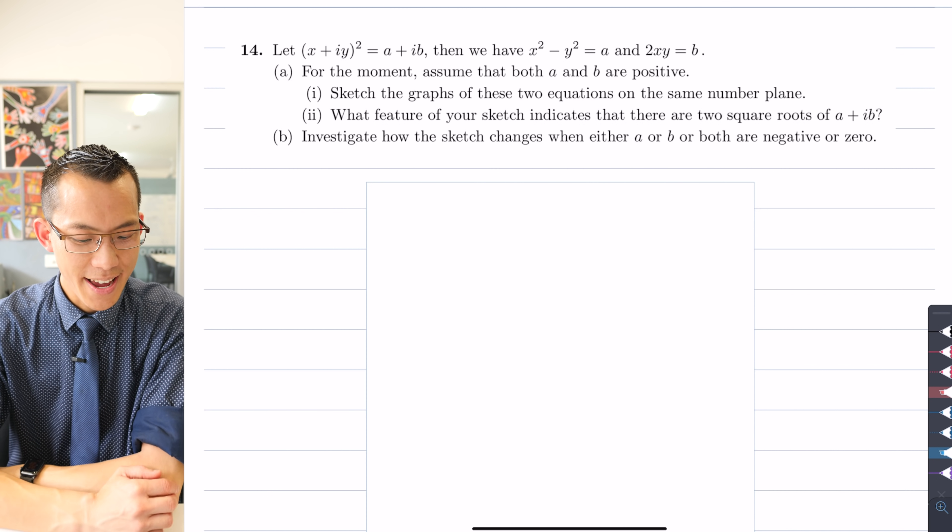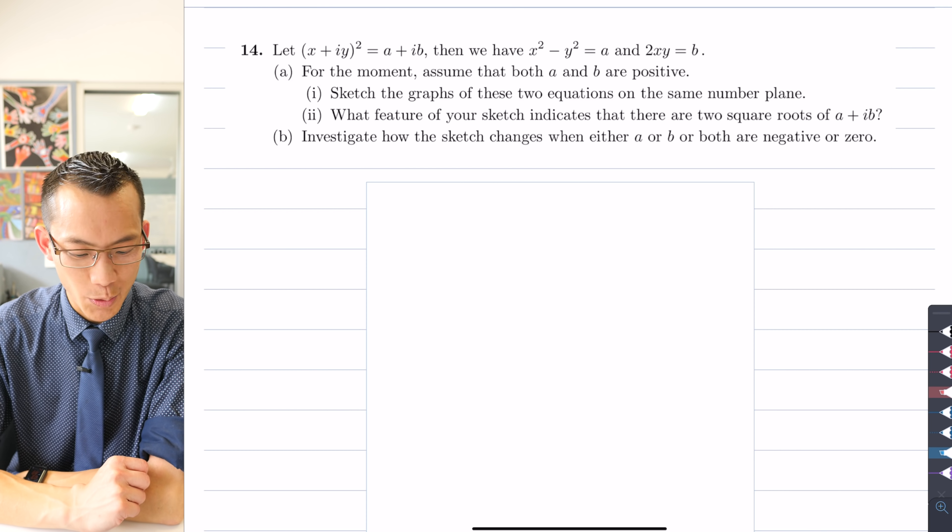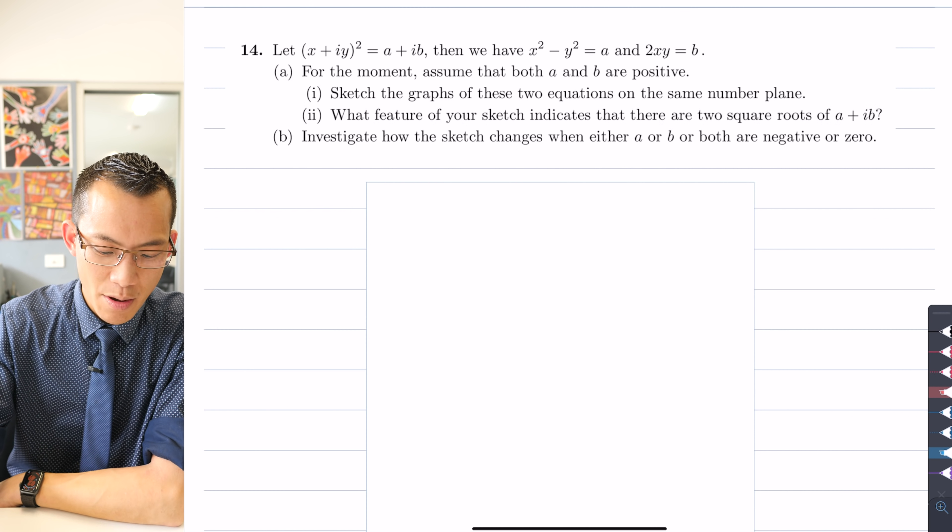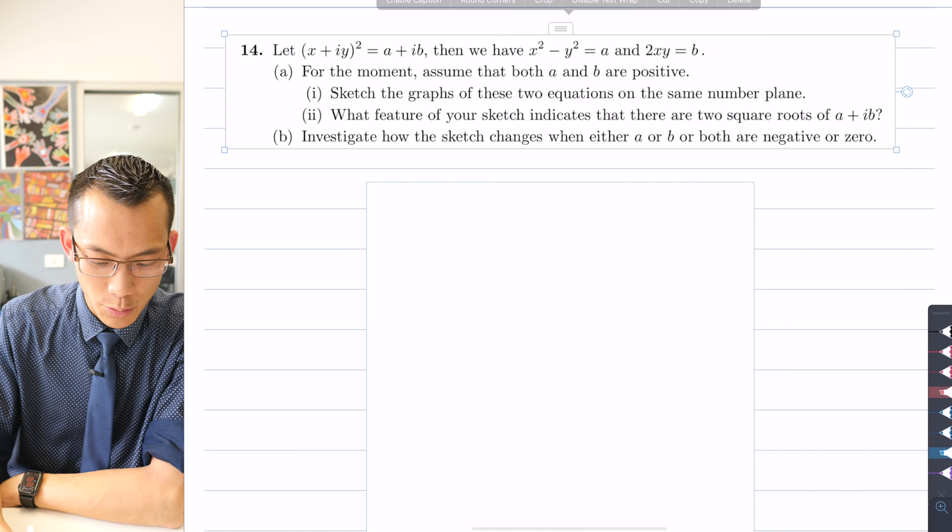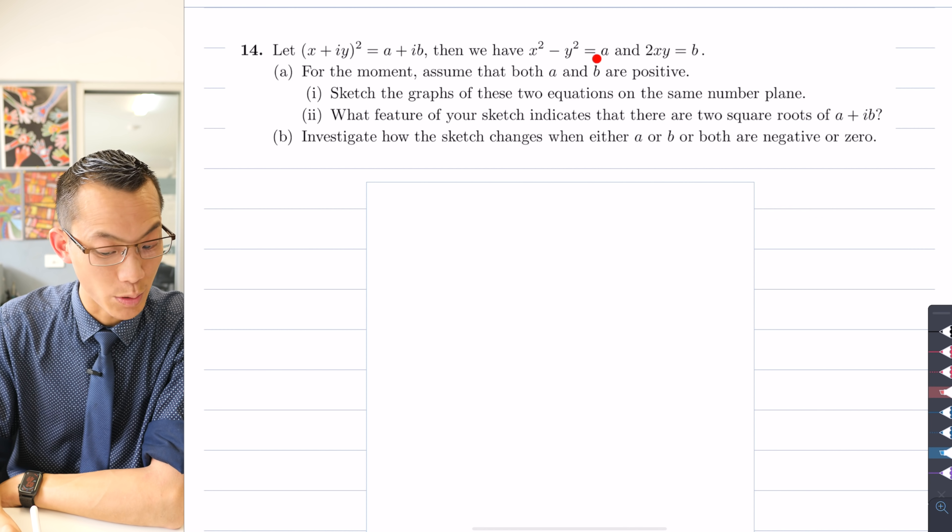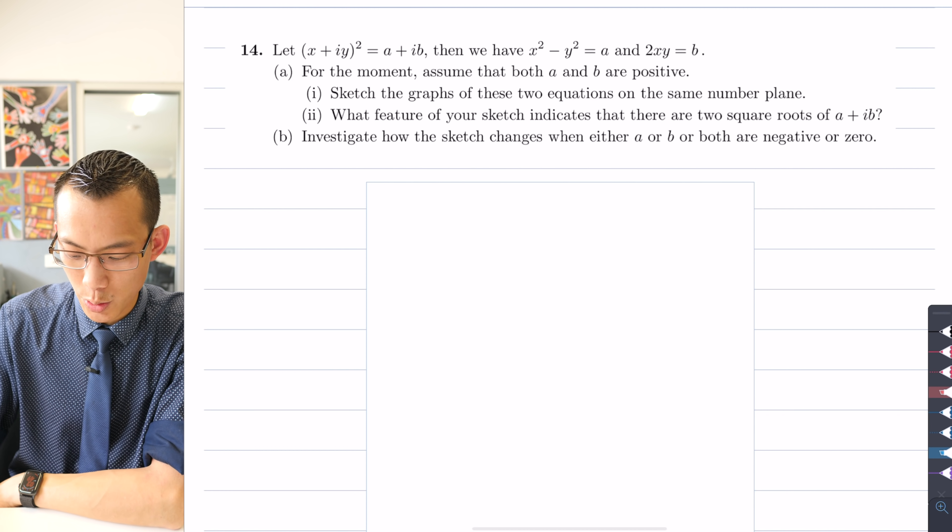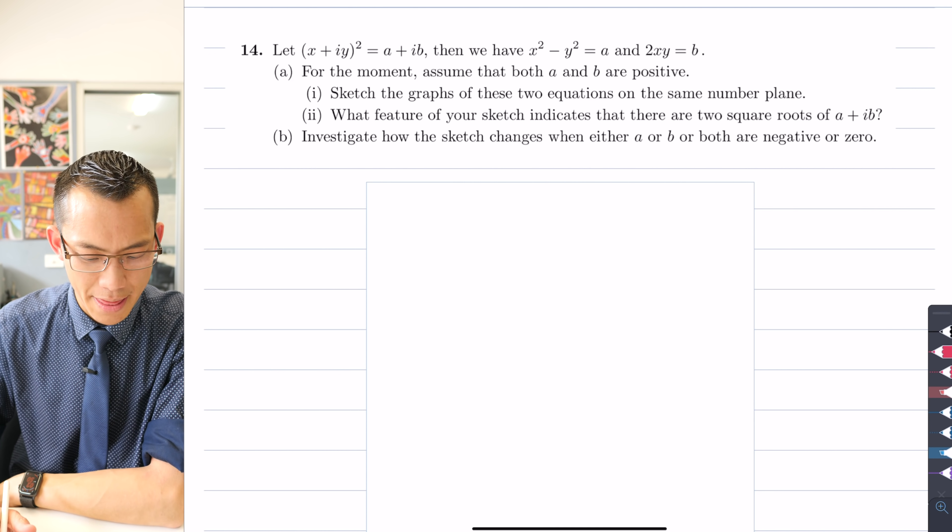So let x plus iy squared equal a plus ib. Then we have x squared minus y squared equals a and 2xy equals b. Let's just remember where that comes from.